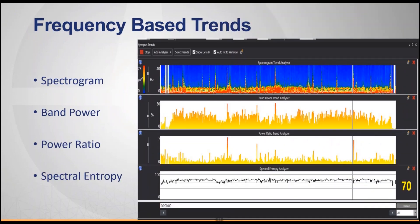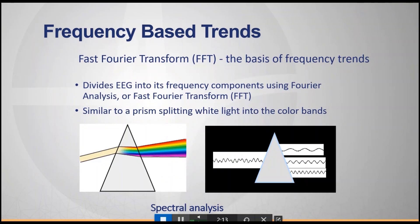The frequency-based trends include the spectrogram, band power, power ratio, and spectral entropy. Essentially, all of the frequency-based trends are dependent on the Fourier transform. The Fourier transform is a way of converting the time domain information — that's the raw EEG — into frequency domain information, which is the frequency spectra.